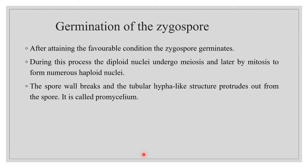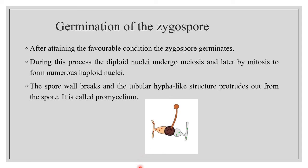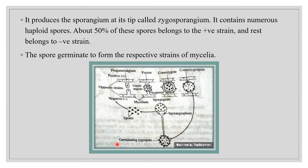Upon attaining favorable conditions, the zygospore germinates. During germination, the diploid zygospore nuclei undergo meiotic division and produce numerous haploid nuclei. The spore wall splits open and a tubular hypha-like structure called the promycelium protrudes out. It grows vertically upward and its tip expands to form a sporangium called the zygosporangium. The zygosporangium produces numerous uninucleate spores; nearly 50% belong to the positive strain and the rest to the negative strain.